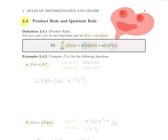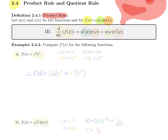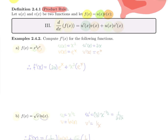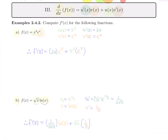Let's start with the product rule. Suppose f(x) is the product of two functions. I like to use u and v — so f(x) = u(x) times v(x). What you do is compute the derivative of the first one, call it u prime, and multiply it by v untouched, plus u untouched times the derivative of the second one. So if f(x) = u times v, then f′ = u′v + uv′.